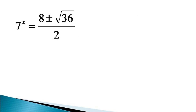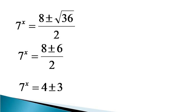This becomes 7 raised to the power x is equal to 8 plus or minus 6 divided by 2, or 7 raised to the power x is equal to 4 plus or minus 3. This gives us two values for 7 raised to the power x.